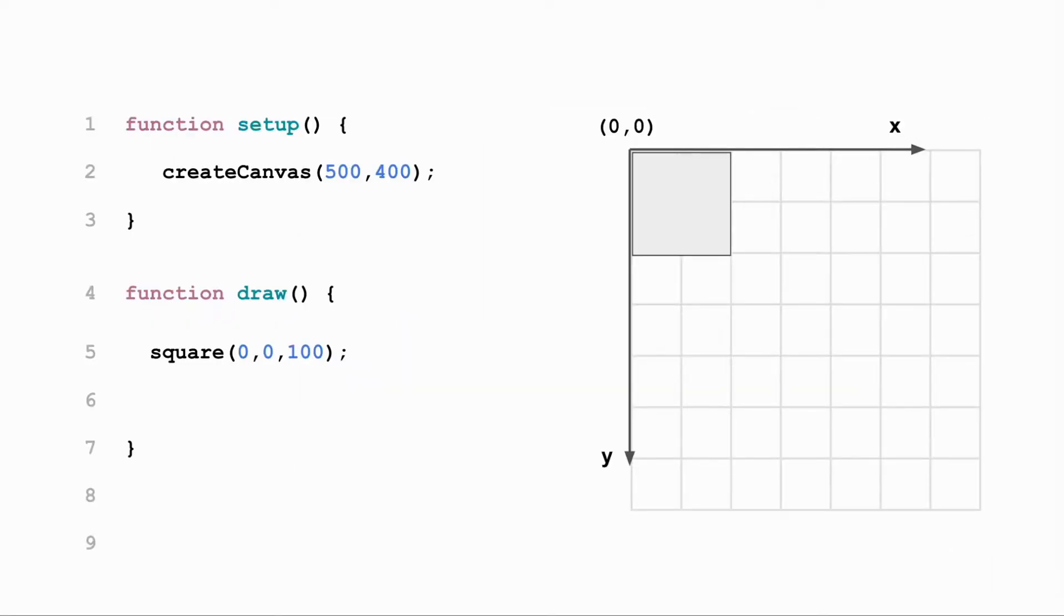The origin, 0,0, of a P5JS canvas is located at the top left-hand corner of the canvas. In this example, a 100 pixel square can be drawn at the origin by setting the x and y position of the square to 0,0.